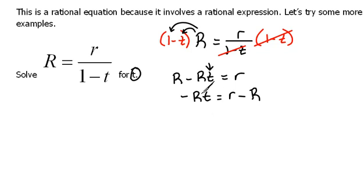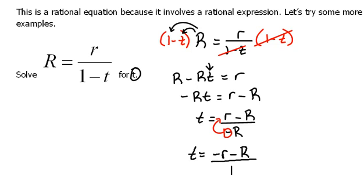Now again, we're getting t alone, so we need to get rid of everything but t on this left-hand side. In order to do that, we're going to divide by negative r. So if I'm dividing both sides by negative r, we're left with t equals small r minus capital R divided by negative capital R. Now this is a fine answer, there's nothing wrong with it, but we don't really like to leave a negative in the denominator. So we need to move that negative up to the top, which will give us t equals negative r plus capital R over capital R.